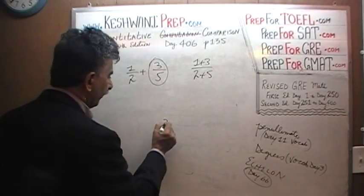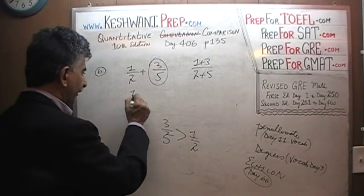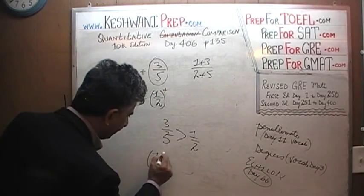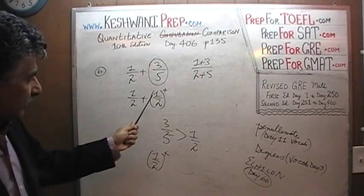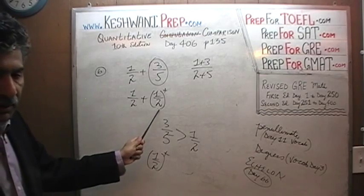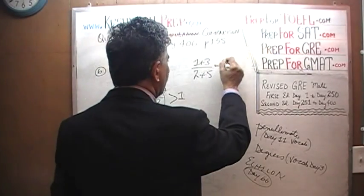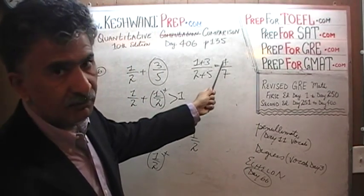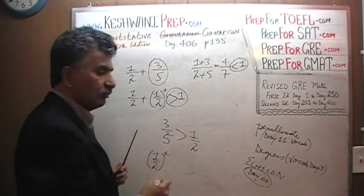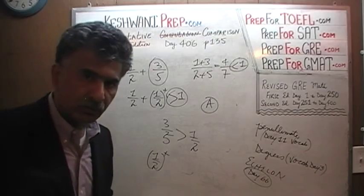Here we have 3 over 5 versus 4 over 7. 3 over 5 we know is more than half. So we have a half plus something that is more than half — if you're adding something more than half to a half, then the sum is going to be more than 1. What do we have on the other side? We have 4 over 7. Since the numerator is less than the denominator, 4 over 7 is less than 1. So this quantity is less than 1 and this quantity is more than 1. Therefore the answer is A. Don't waste your time unnecessarily. I'll see you tomorrow. Bye now.